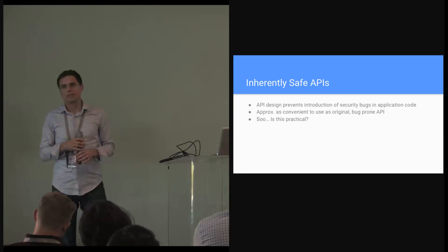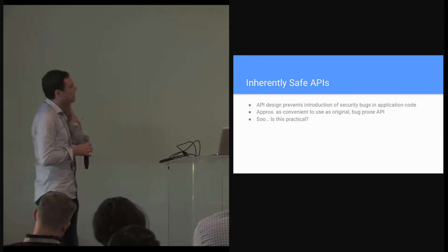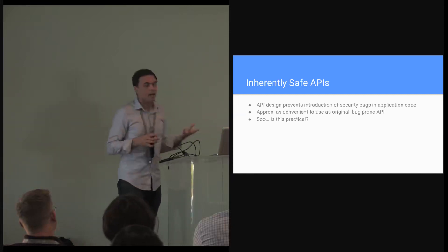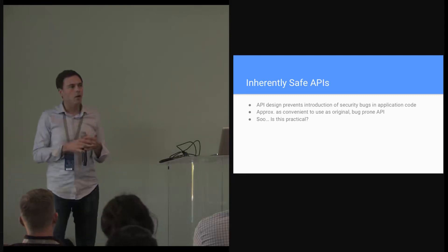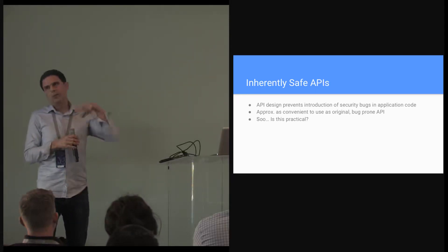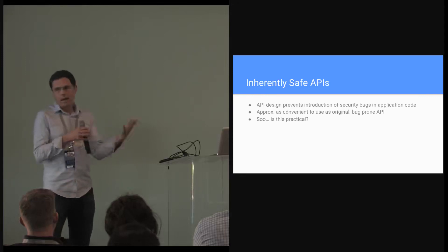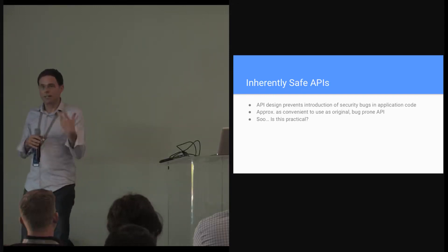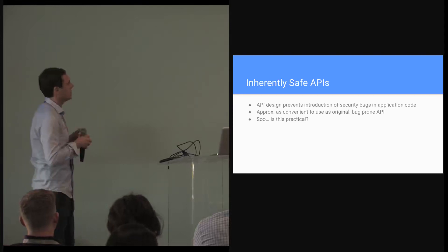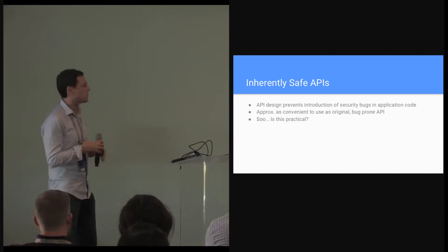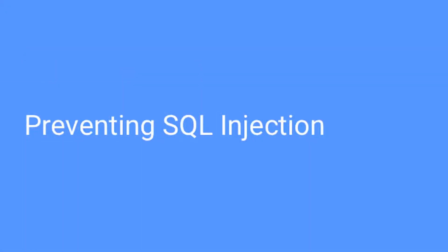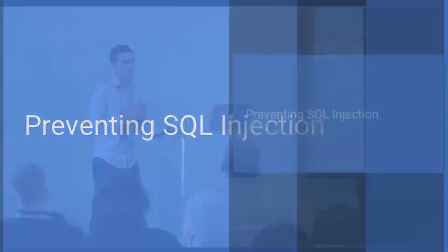We have to make these APIs usable — approximately as convenient to use as the original vulnerability-prone API. The interesting question is: can we actually do this? Is it practical? Can we come up with APIs that are both constrained enough to prevent security vulnerabilities in application code, but at the same time expressive enough so that developers can still write the code they need to write and do so productively? So we have to make sure these APIs are actually usable.